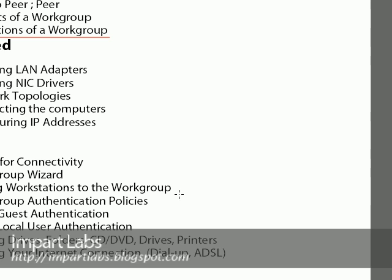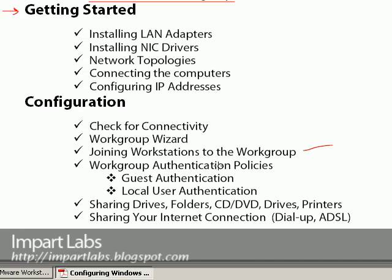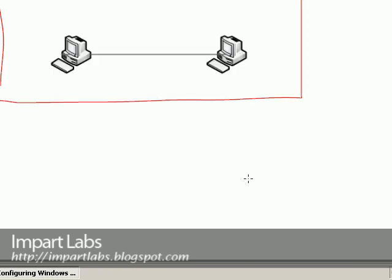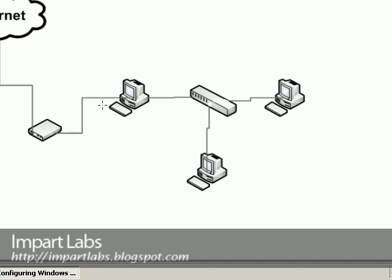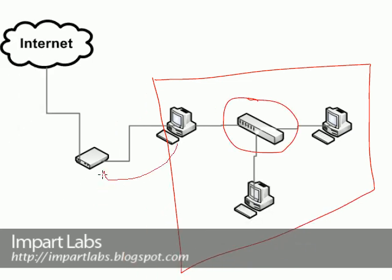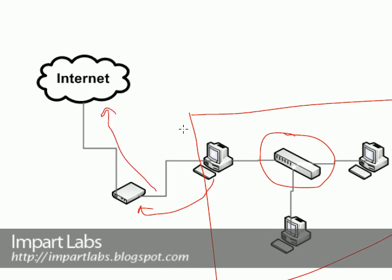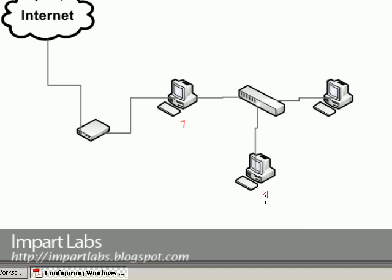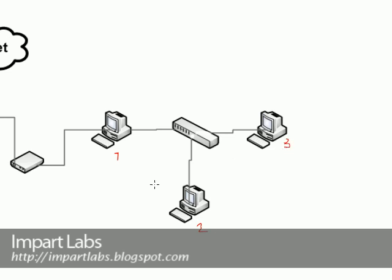We have actually joined the workstations to the workgroup. Now here come the workgroup authentication policies — guest authentication and local user authentication. Let's go to the diagram, which shows three computers connected to the switch, and this client connected to the modem connected to the internet. On our workgroup we have client one, client two, and client three, and this is the modem.